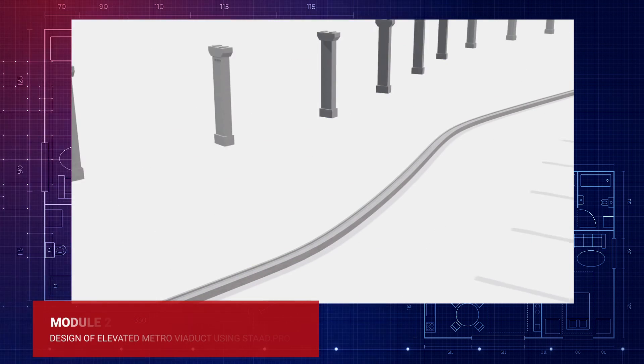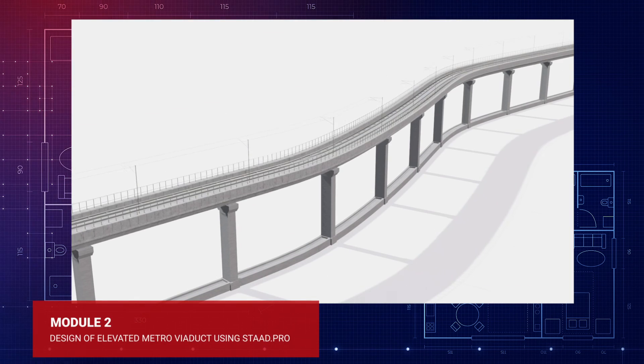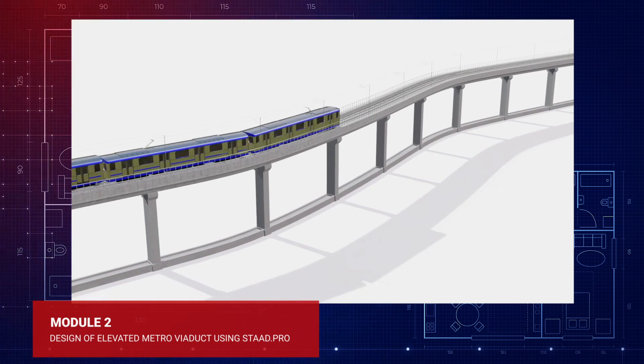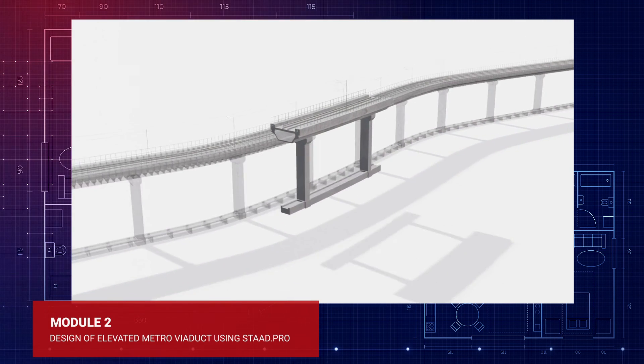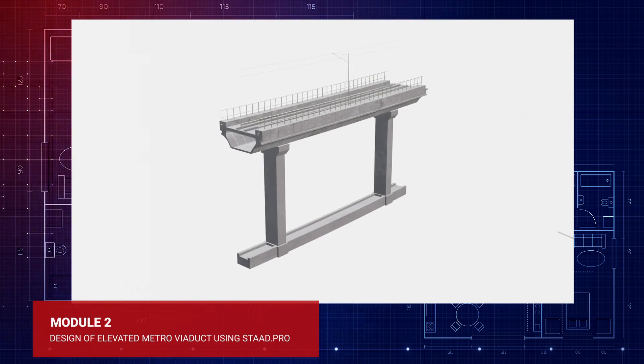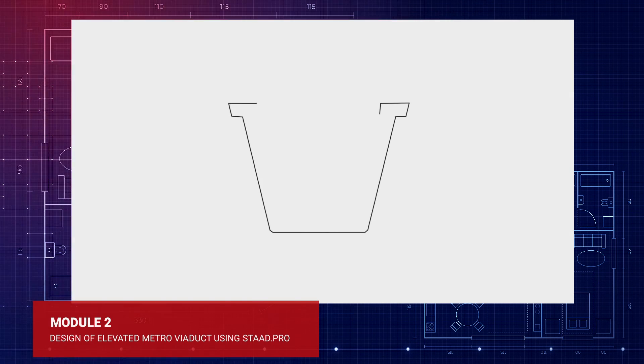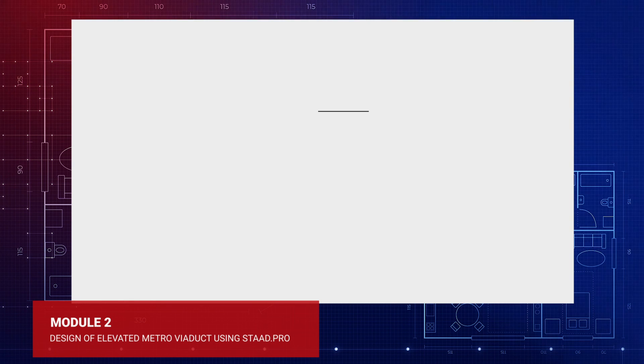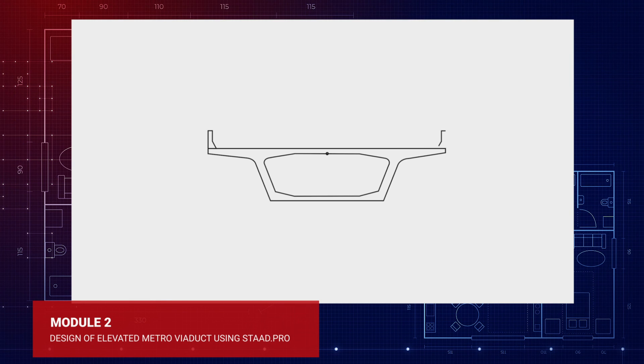Module 2 covers the design of elevated metro viaducts. This includes the design and analysis of superstructure components like U-girder, I-girder, box-girder and bearing designs.